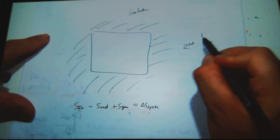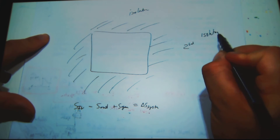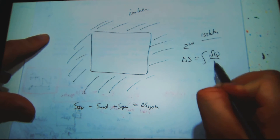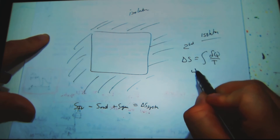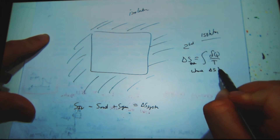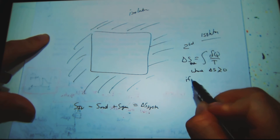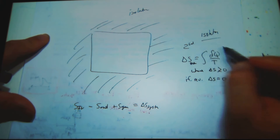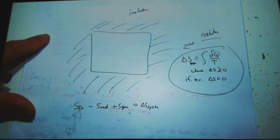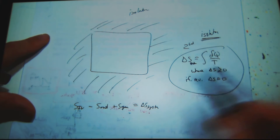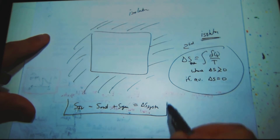Second law — isolated. Delta S equals the integral of delta Q over T, where delta S is greater than or equal to zero; if reversible, delta S equals zero. Okay, so this is what you memorized. Now when I talk about it, you just go there. This is what I told you about entropy balance.